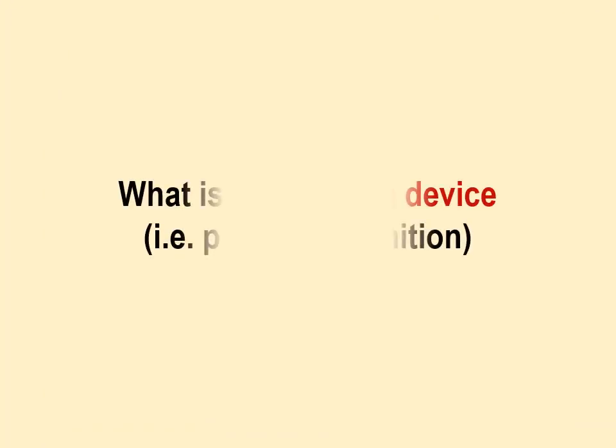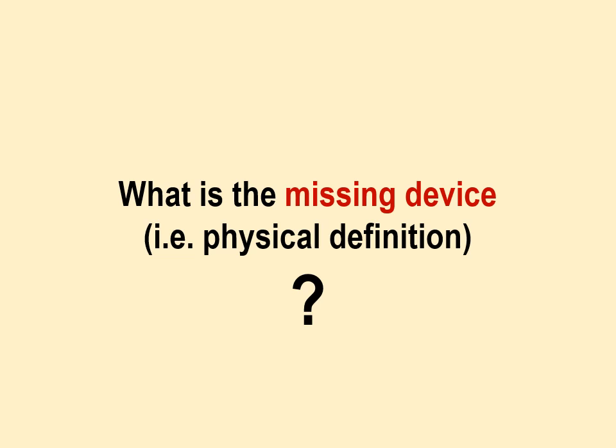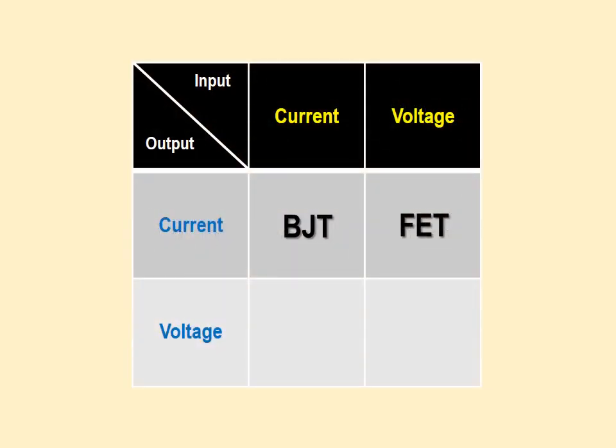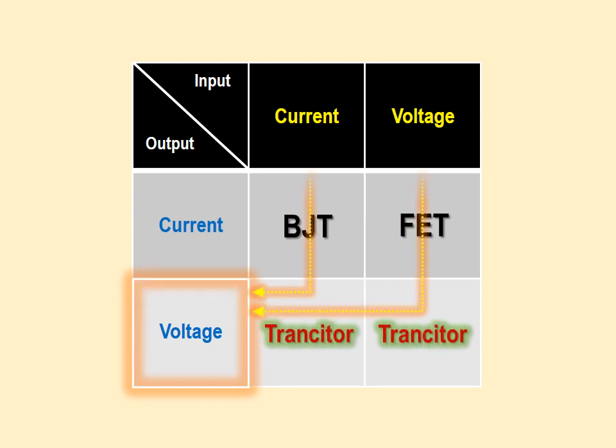Now the next question is: what are these missing devices? At the moment we can name it as trancitor rather than transistor, since it works like a variable capacitor which directly generates a voltage output with a transferred input. This is the key difference from transistors.